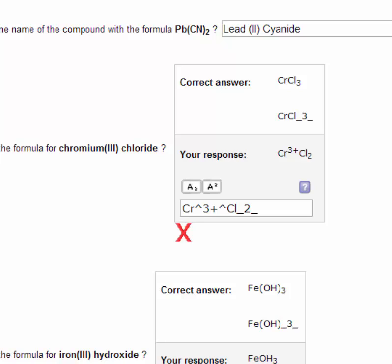So let's look at chromium(III) chloride. Here, it appears you provided or included the actual charge on the metal in the formula, which is not necessary.